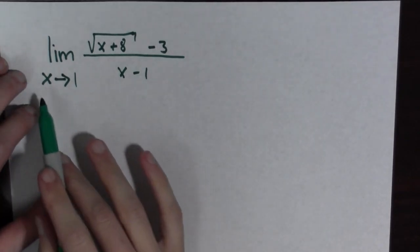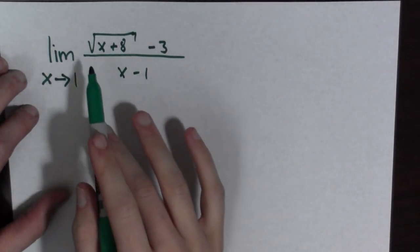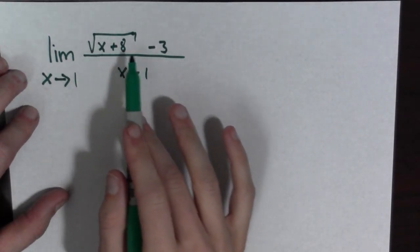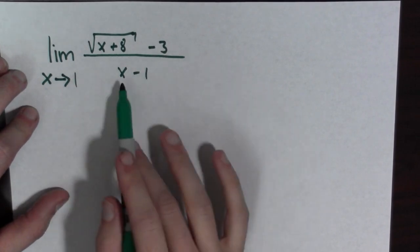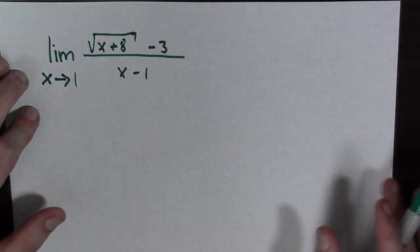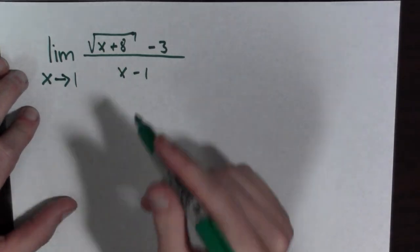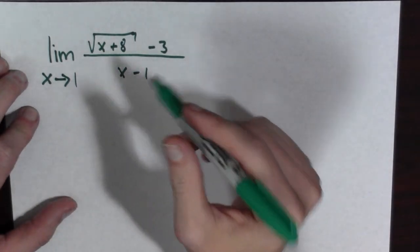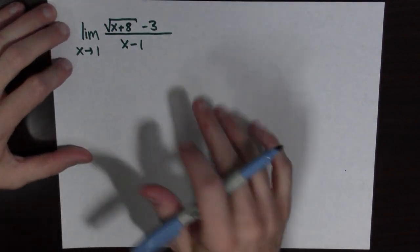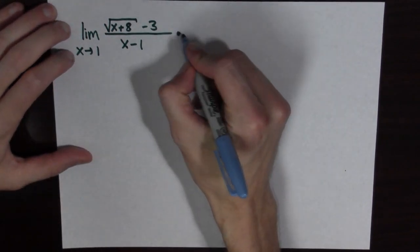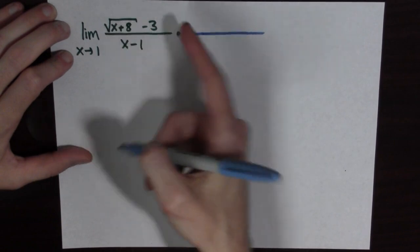Let's see the next example. We want to compute the limit as x goes to 1 of the square root of x plus 8 minus 3, all over x minus 1. While we'd like to plug in 1 for x, we cannot because there's an x minus 1 in the denominator. This time we rationalize the numerator by multiplying by the conjugate.